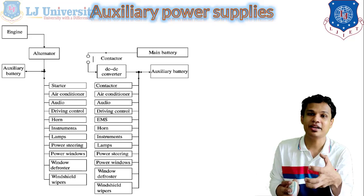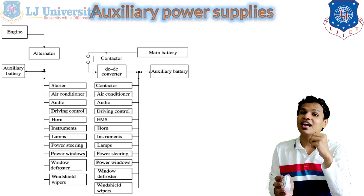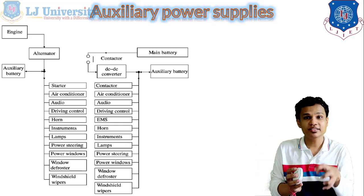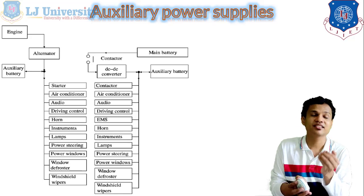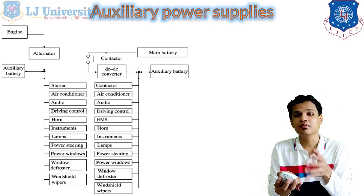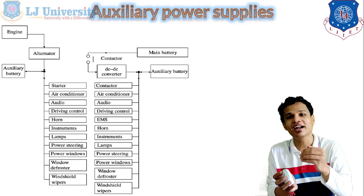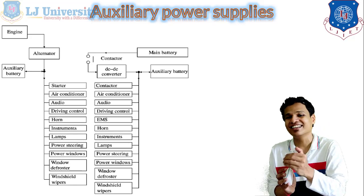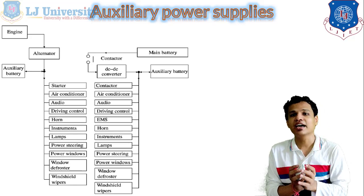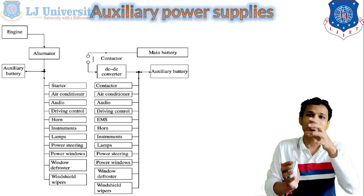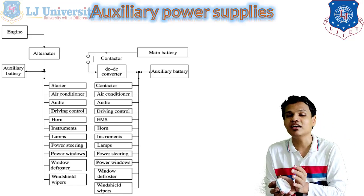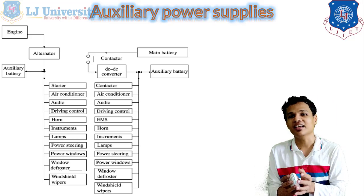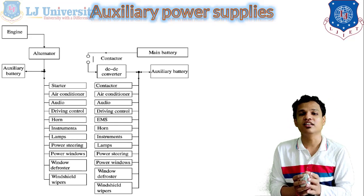A separate battery is used to run the auxiliary system, and that auxiliary battery will be charged from our main battery. The auxiliary battery is kept such that if the main battery discharges, the auxiliary battery will have enough power to keep these components running. In the schematic diagram you can see the difference between IC engine auxiliaries and electric vehicle auxiliaries — IC engine auxiliaries on the left side, electric vehicle auxiliaries on the right side.